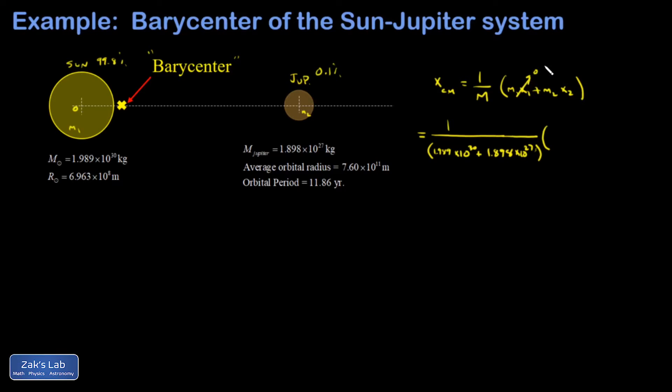What that does, by the way, we're not totally ignoring where the Sun is. That just moves the center of mass closer to 0, which may make sense because that's where most of the mass is.